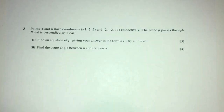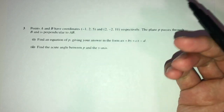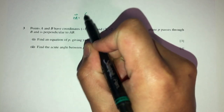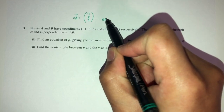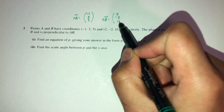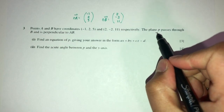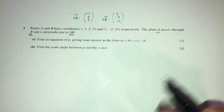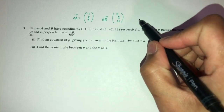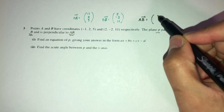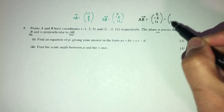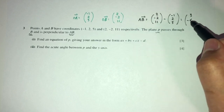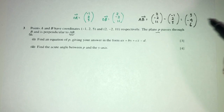Now let's move on to question number 3. Points A and B have given coordinates. I'll write them as vectors: OA = (−1, 2, 5) and OB = (2, −2, 11). We have a plane P that passes through point B and is perpendicular to AB. The first thing we can find is the direction of AB: AB = OB − OA = (2−(−1), −2−2, 11−5) = (3, −4, 6).